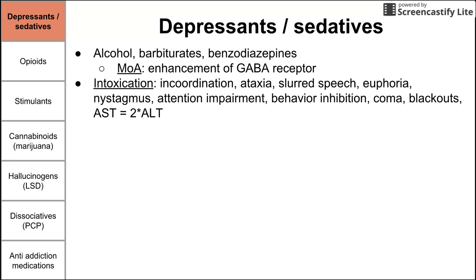Symptoms of intoxication of these depressants are incoordination, ataxia, slurred speech, euphoria, nystagmus, impaired attention, inhibition of behavior, coma, and blackouts. It's worth noting that on liver function tests, the AST is often twice the ALT with intoxication from these drugs. This is essentially being drunk — incoordination, ataxia, slurred speech. When somebody gets drunk, they present with the symptoms listed here.